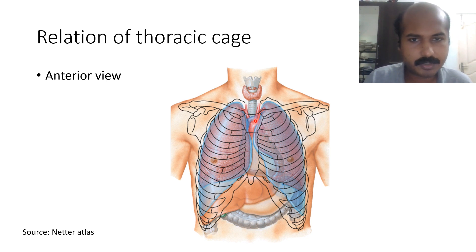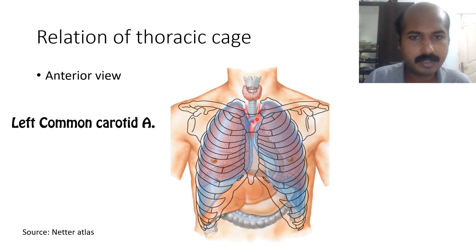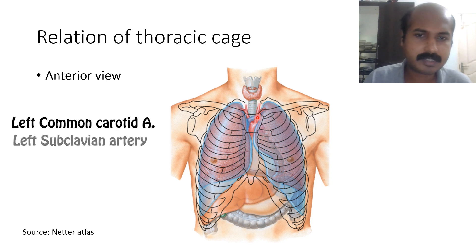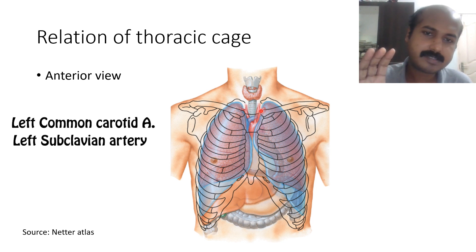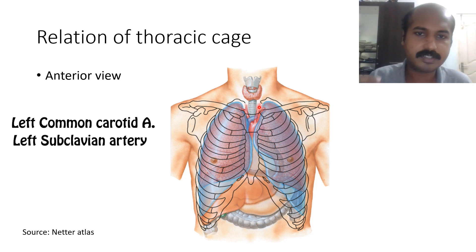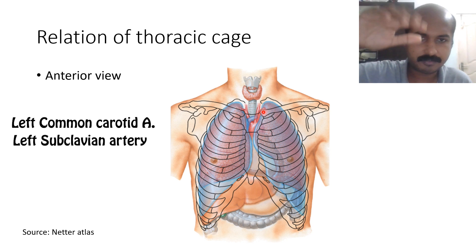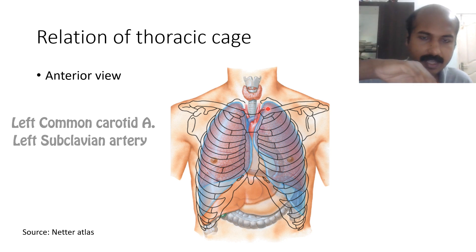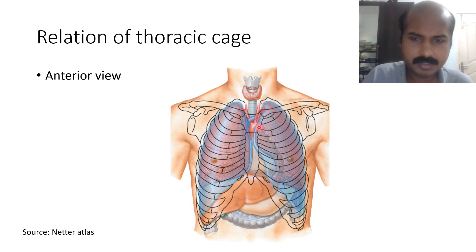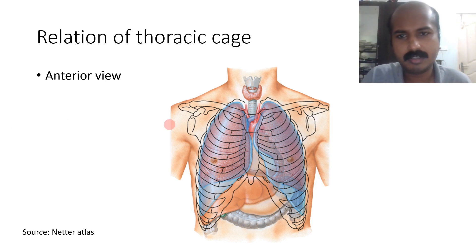Just after giving off the brachiocephalic, the arch gives off the left common carotid and the left subclavian, which run very close together. As they reach the left sternoclavicular joint, they diverge — the left common carotid and left subclavian take their own way into the left part of the head, neck, and upper limb.